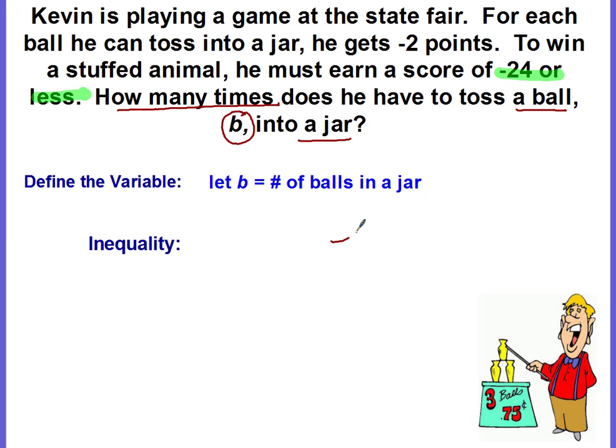So we have negative twenty four. Now is negative twenty four the maximum number of points or the minimum? Well, it says he must earn a score of negative twenty four or less. So anything he earns has to be less than the negative twenty four. So negative twenty four is the maximum amount. Can it be equal to negative twenty four? Yes, because it says negative twenty four or less. So draw our equal line.